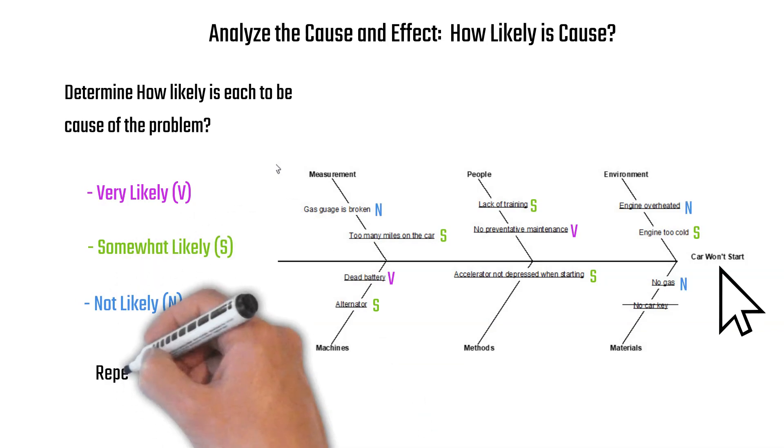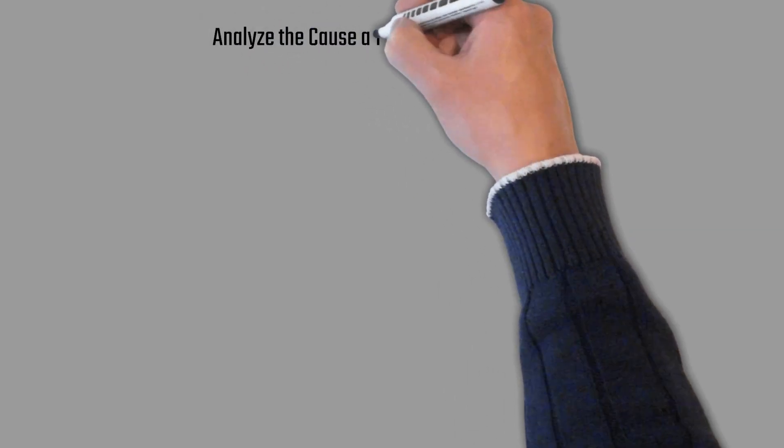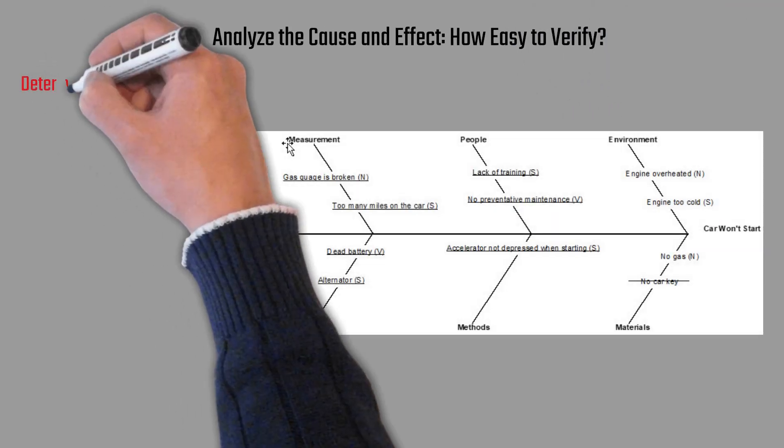So, for example, no preventative maintenance could be very likely that that's the cause. And we put a V for it. Too many miles on the car - somewhat likely. We put an S on it. Or the gas gauge is broken - not likely. We put an N. So each item has that recorded for it on the fishbone diagram.